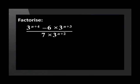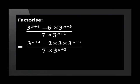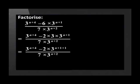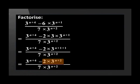Factorize: 3 to the power of n+4 minus 6 times 3 to the power of n+3, over 7 times 3 to the power of n+2. Start by writing 6 as a product of its prime factors: 6 equals 2 times 3. In the second term of the numerator, we see two bases with the value 3 multiplied together, so we can add the exponents, giving 2 times 3 to the power of n+3.